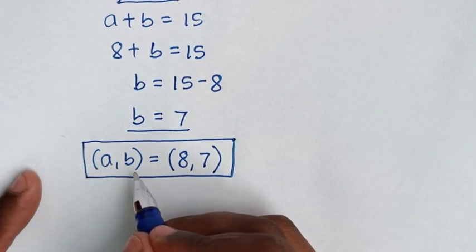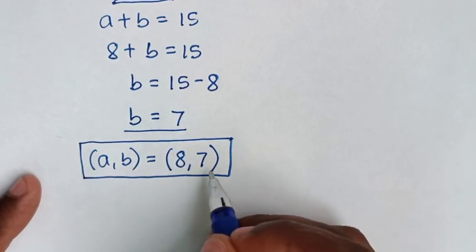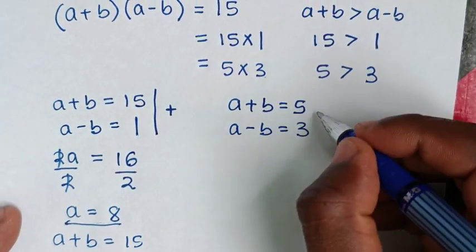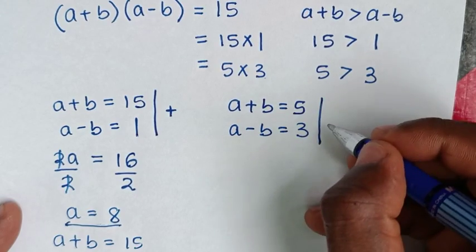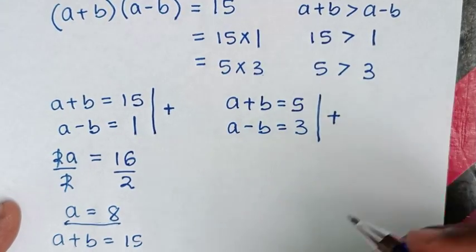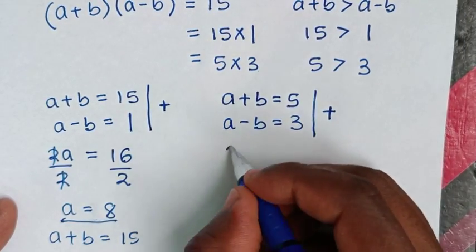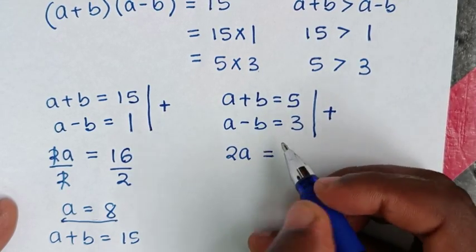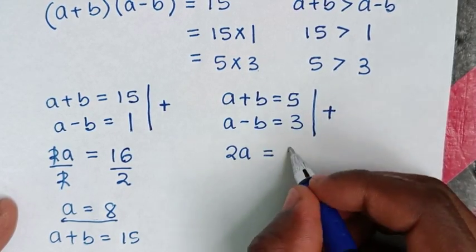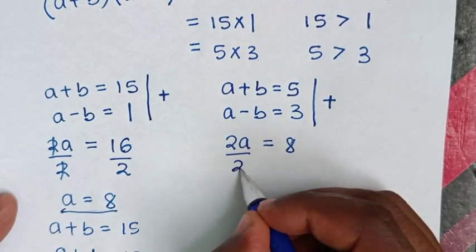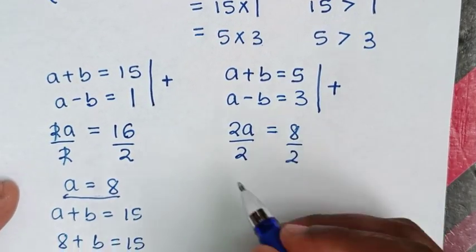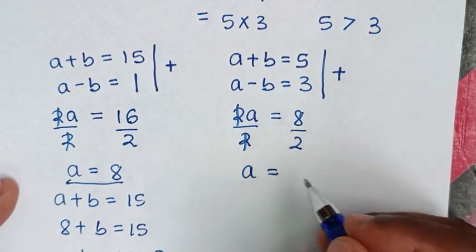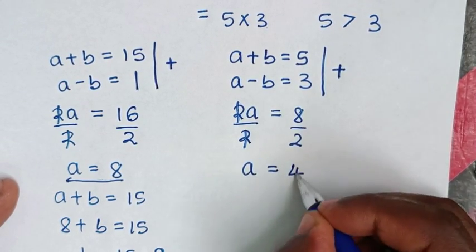Now solving the second system using the elimination method. Adding the two equations: 2a equals 5 plus 3, which is 8. Dividing both sides by 2, we get a equals 8 divided by 2, which is 4.